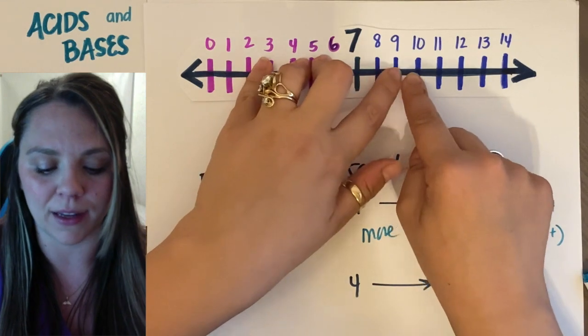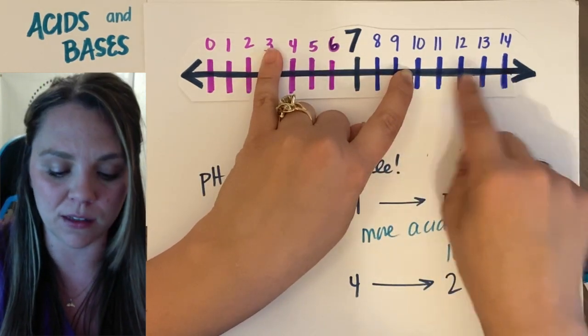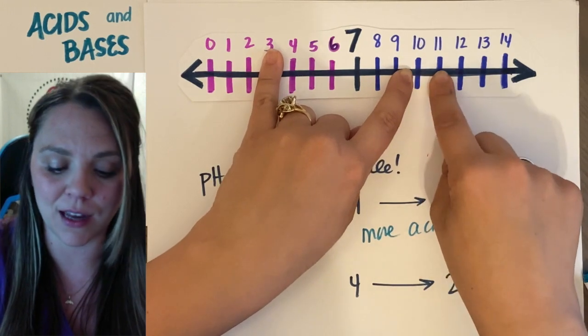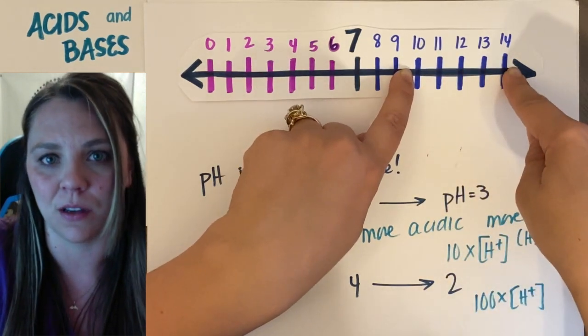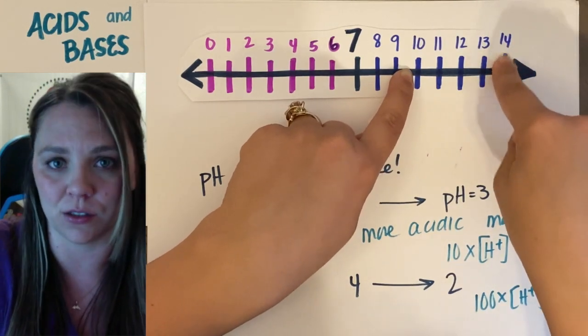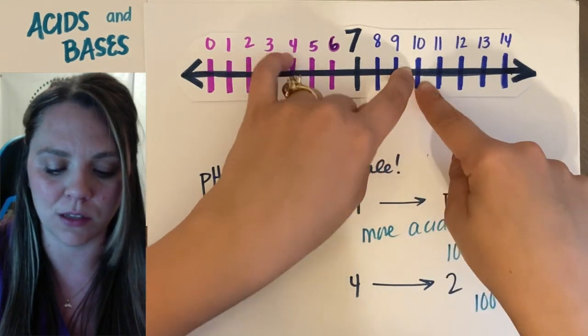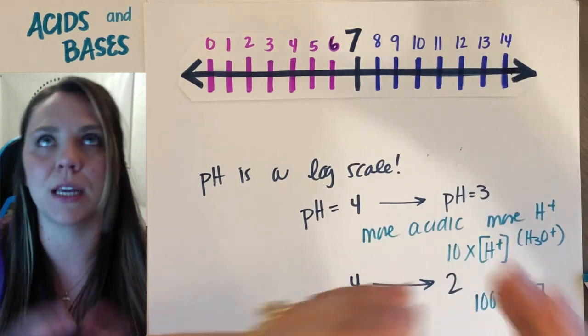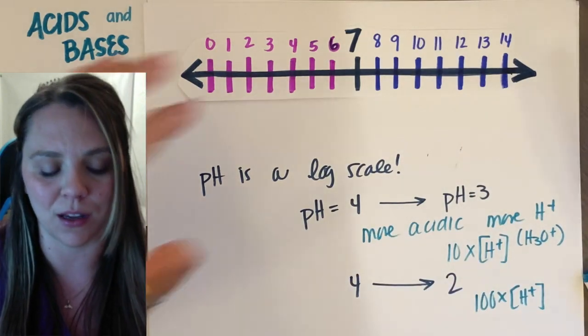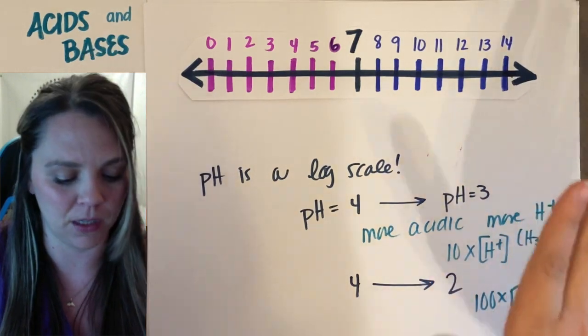If I just had regular soap at like 10 versus if I had oven cleaner at 14, you're talking about 10, 100, 1,000, 10,000 times the concentration of hydroxide in this oven cleaner solution than I would in just regular hand soap. So just understand the gigantic scale here that we're talking about when you're talking about logarithmic scale. We're talking exponential.